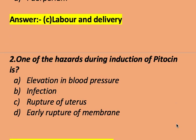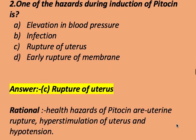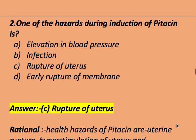One of the hazards during induction of Pitocin is: elevation in blood pressure, infection, rupture of uterus, and early rupture of membrane. The right answer is rupture of uterus. The rationale is that health hazards of Pitocin include uterine rupture, hyperstimulation of uterus, and hypotension.